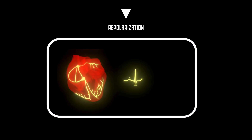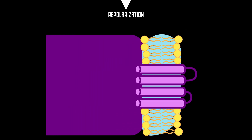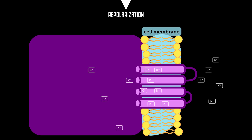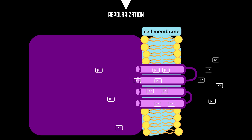During repolarization, myocardial cells undergo a series of electrical changes that enable them to recharge and return to their resting state. This process involves the movement of ions across the cell membrane, particularly potassium ions moving out of the cell.